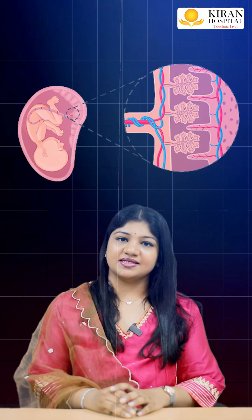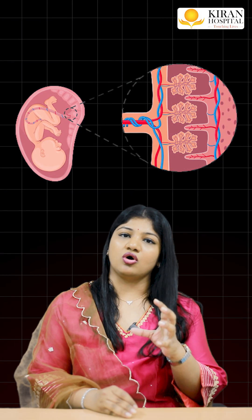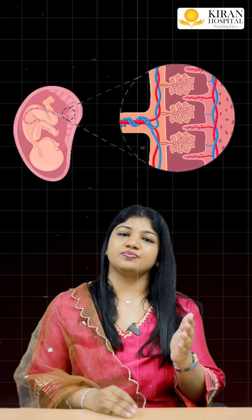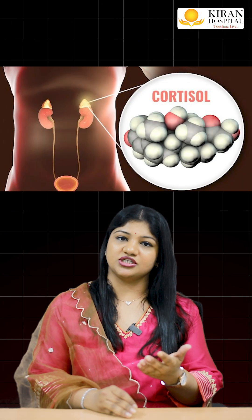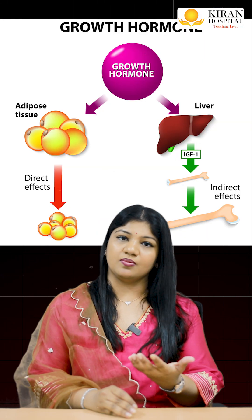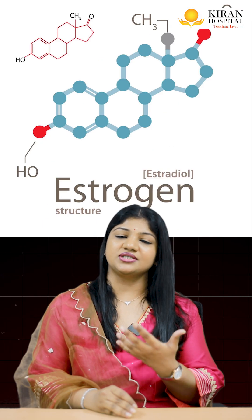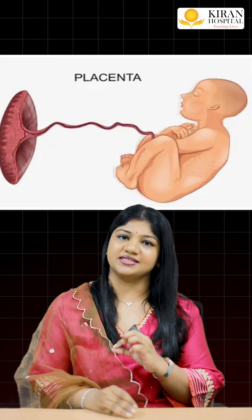This is because the placenta, which is an organ that provides oxygen and nutrients from the mother to the fetus, produces certain hormones like human placental lactogens, cortisol, growth hormones, estrogens, and progesterone — some of the hormones produced by the placenta.